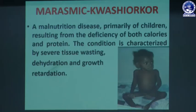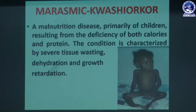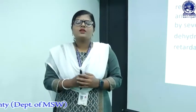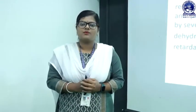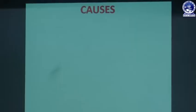Marasmic Kwashiorkor is a malnutrition disease primarily of children resulting from deficiency of both calories and protein. The condition is characterized by severe tissue wasting, dehydration, and growth retardation. When the child has a lack of both protein and calorie they face Marasmic Kwashiorkor, which also causes growth retardation and dehydration.